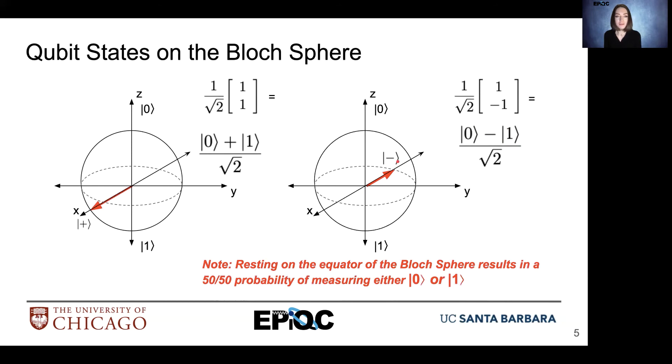Something very important to note: whenever you rest on the equator of the Bloch sphere, that results in a 50-50 chance of being observed in either state zero or state one — ket zero or ket one, respectively.